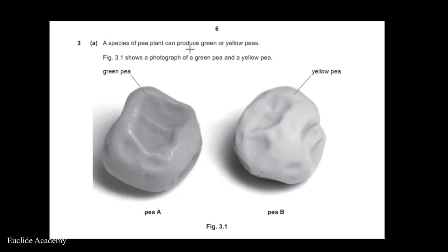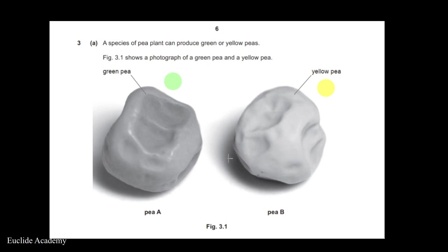A species of pea plant can produce green or yellow peas. Figure 3.1 shows a photograph of a green pea and a yellow pea. The green pea is known as Pa and the yellow one is called Pb.